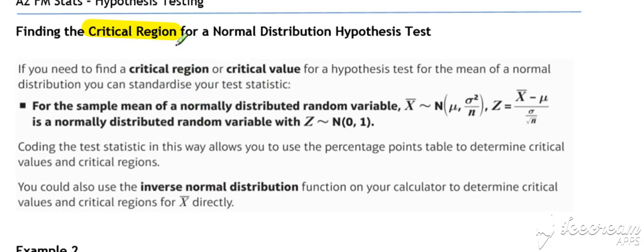And then you can later on see whether the test statistic falls within that critical region. So the critical region for any hypothesis test is basically the region in which your test statistic would fall to cause you to reject the hypothesis.